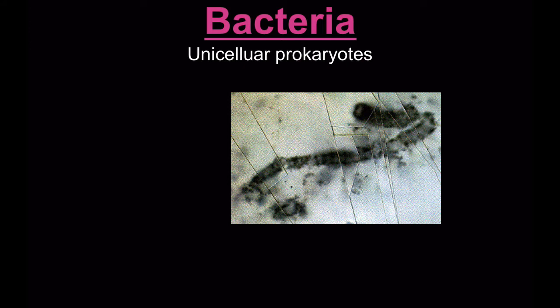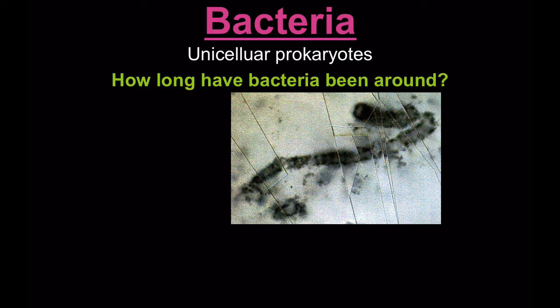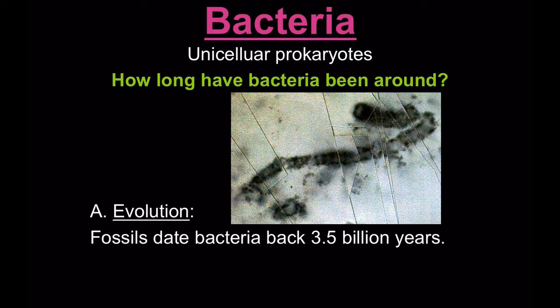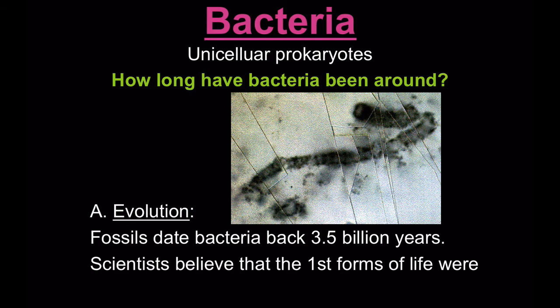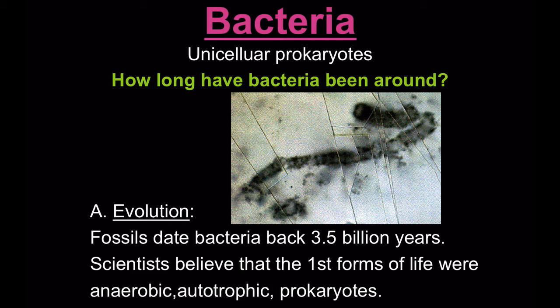Bacteria are unicellular prokaryotes. A prokaryote is a unicellular organism that does not have a nucleus or membrane-bound organelles. Fossils date bacteria back 3.5 billion years. Scientists believe that they were the first forms of life. They were anaerobic, which means they can live without oxygen, and autotrophic, which means they can make their own food.